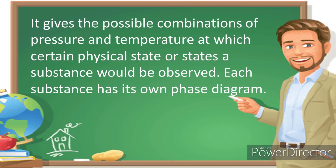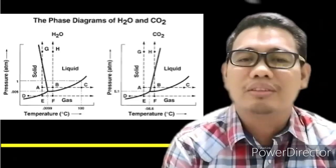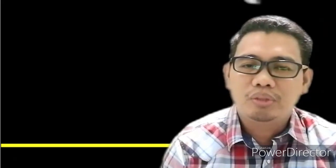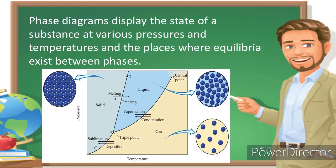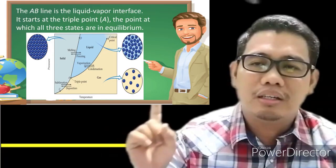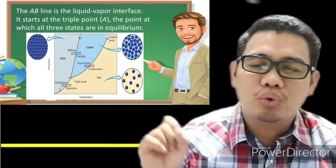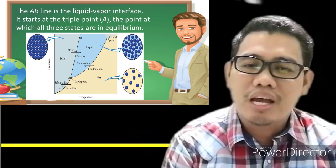In this lesson, we are going to establish the phase diagram of water and carbon dioxide. A phase diagram displays the state of a substance at various pressures and temperatures and the places where equilibria exist.